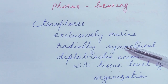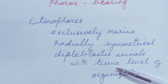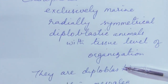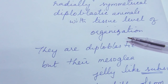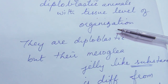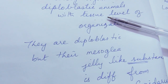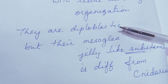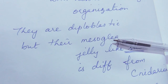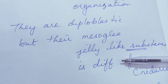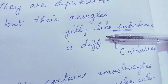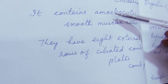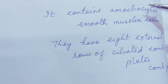Ctenophores are exclusively marine — living in seawater and oceans. They are radially symmetrical and diploblastic animals with tissue level of organization. Previously we learned cell grade organization; now Ctenophora has tissue level of organization. They are diploblastic animals with mesoglia — a jelly-like substance — which is different from cnidarians. This mesoglia contains amoebocytes — moving cells — and smooth muscle cells.